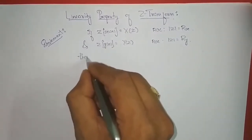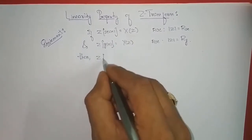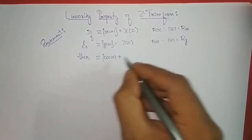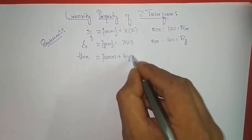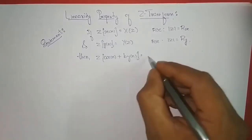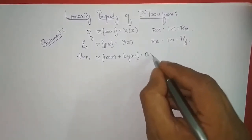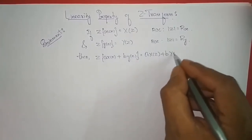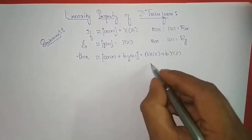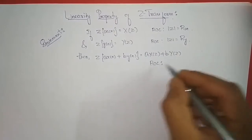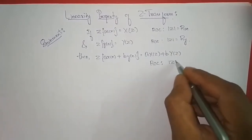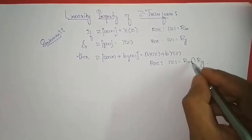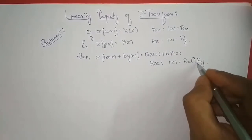then the Z-transform of a times x(n) plus b times y(n) is given by a times X(z) plus b times Y(z), and the ROC for this is actually the intersection of rx and ry — the intersection of both sequences.